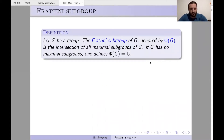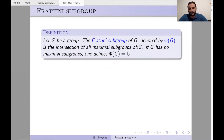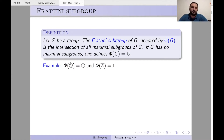Let us start with the definition of the Frattini subgroup. Given a group G, the Frattini subgroup, denoted Φ(G), is the intersection of all maximal subgroups of G. For infinite groups, if G has no maximal subgroups, one defines Φ(G) = G. As an example, Q does not have maximal subgroups, so Φ(Q) = Q.